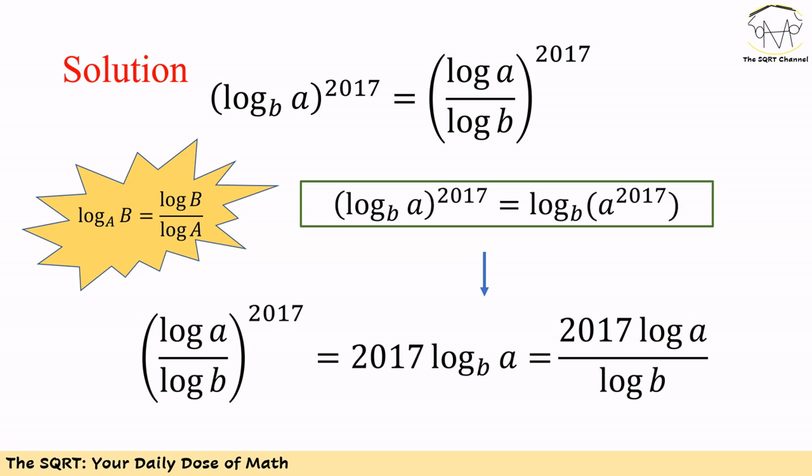So with this we end up with log of A over log of B to the power of 2017 is equal to 2017 times log of A in base B. We can also express log of A in base B using the change of base formula as log A divided by log B, giving us 2017 times log A over log B.